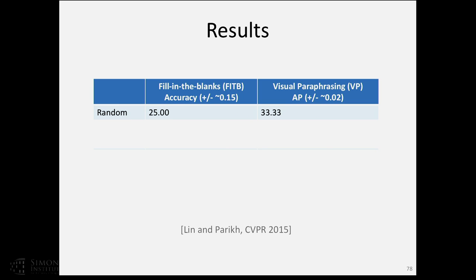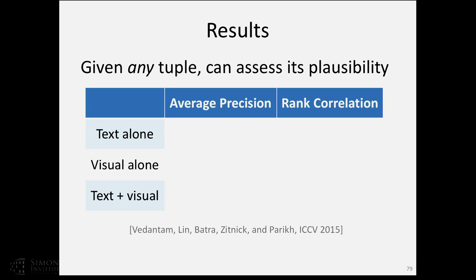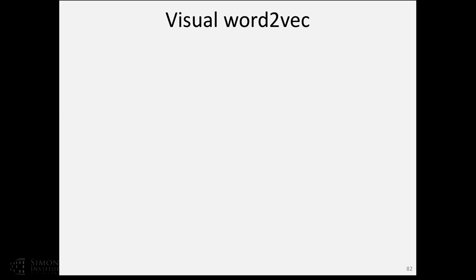The model is set up so that the text with the correct option plus the corresponding scene should score higher than an incorrect option with its scene. We train a Rank SVM that extracts features from both scene and text rather than just text. What we find is this helps — on fill-in-the-blank and visual paraphrasing, combining vision and text gives improvement over text alone, with more improvement on the fill-in-the-blank side. For the plausibility tuple case, vision also gives some improvement over text alone.